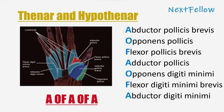The mnemonic 'A-O-F-A' is used to remember the thenar muscles: abductor pollicis brevis, opponens pollicis, flexor pollicis brevis, and adductor pollicis form the thenar muscles.